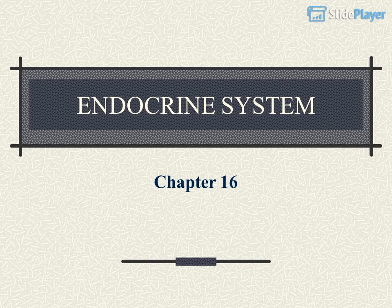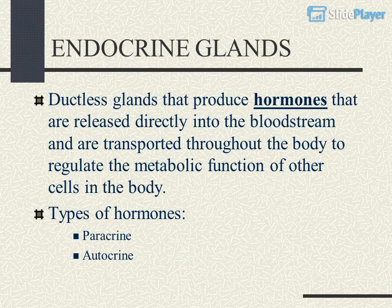Endocrine System, Chapter 16. Endocrine glands are ductless glands that produce hormones that are released directly into the bloodstream and are transported throughout the body to regulate the metabolic function of other cells in the body.